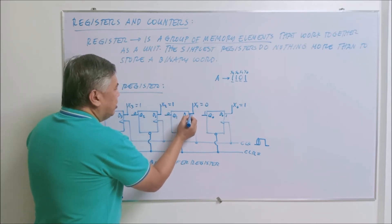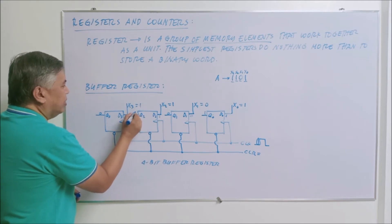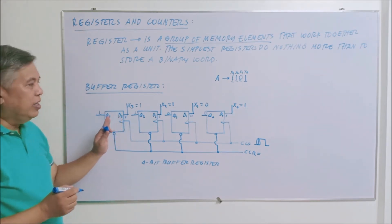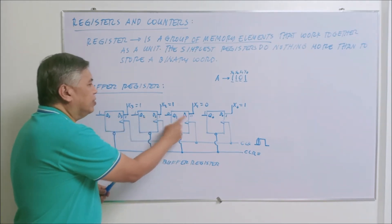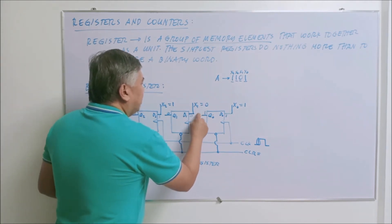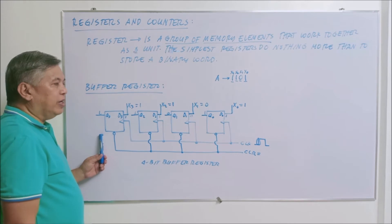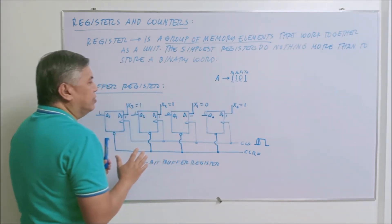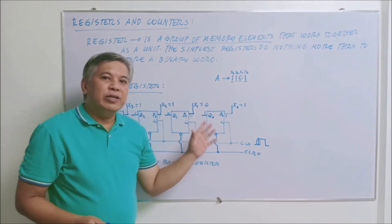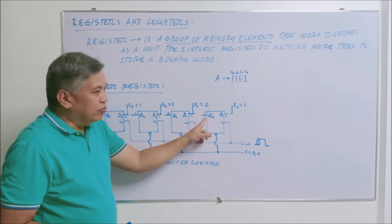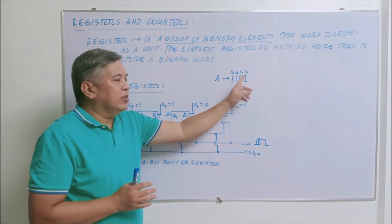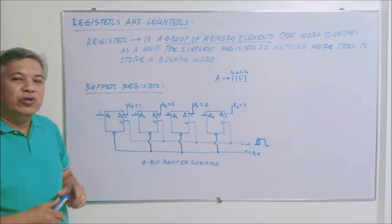D implies Q for each flip-flop. So this becomes 1, this becomes 1, and this becomes 1 also. The stored word now in your buffer register will be 1, 1, 0, 1. To verify the stored values, if you place a light-emitting diode at the output of your buffer register, the LED will light if the output is 1. The data 1101, which is equivalent to letter A, is now stored in your buffer register.